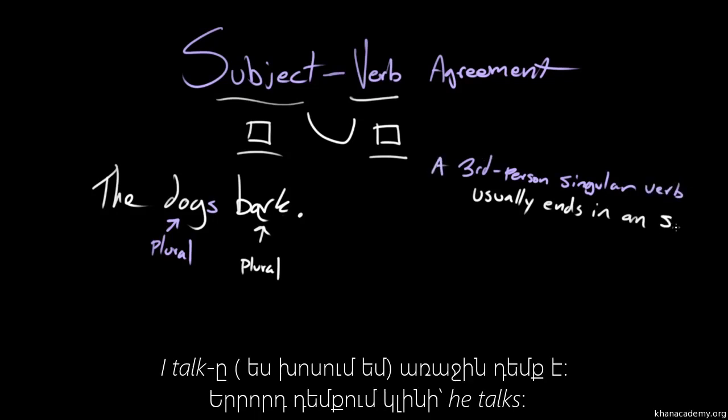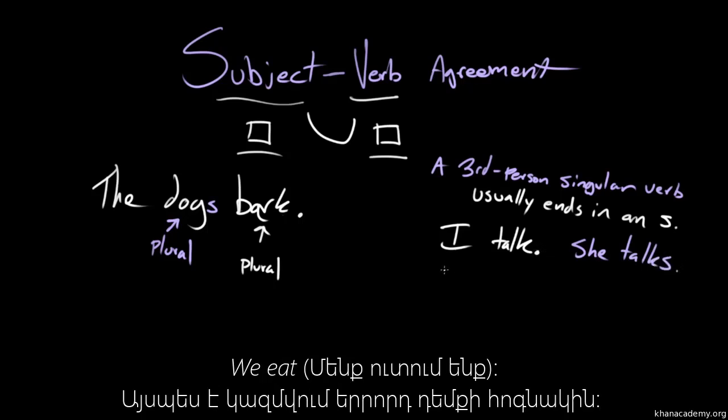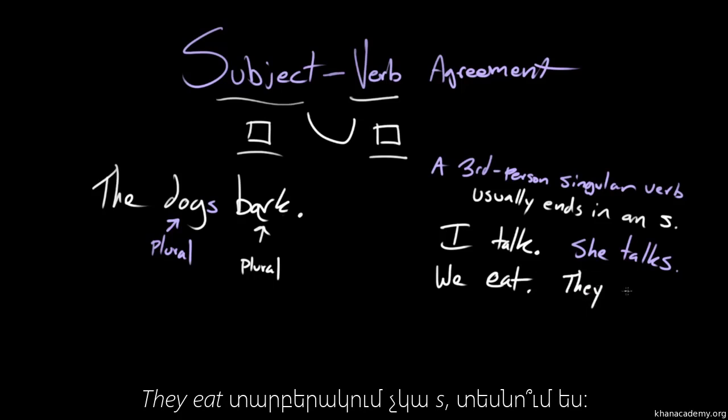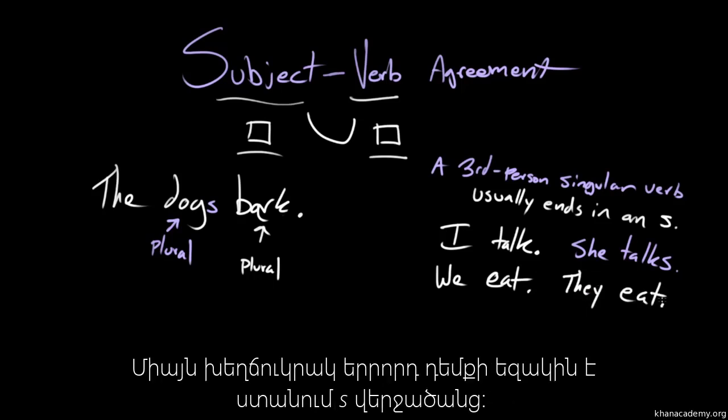Right? So I talk. That's first person. Third person is she talks. We eat. That's plural, first person, they eat. See, no S. It's only this weird third person singular here that's got that S on the end.